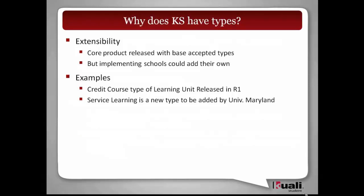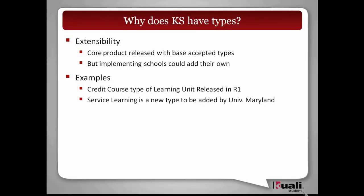Why does it have types in the first place? Kuali Student was originally envisioned because schools were hamstrung by the hard-coded definitions of courses, majors, minors, and so on. Professors increasingly wanted to offer things like service learning — experiences that were academic in nature but weren't really traditional courses. The goal was to model things more abstractly, so you could model a professor who takes all students to the Amazon over spring break, and to allow schools to add their own kinds of types later on.